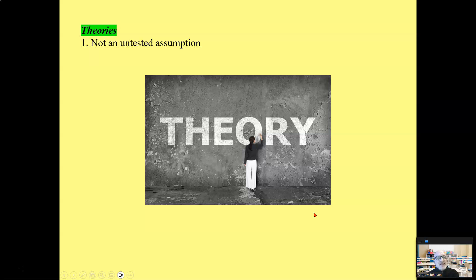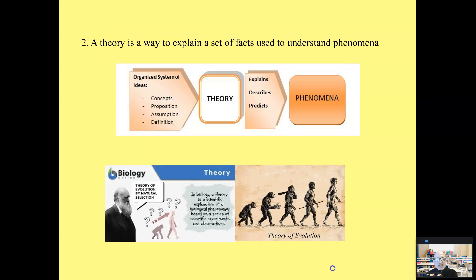First of all, understanding what a theory is in the world of science. A theory is not an untested assumption — that would be a hypothesis. In the world of science, a theory is a way to explain a set of facts. It's used to understand phenomena. It's like a dot-to-dot picture: it connects the dots and helps us understand things.